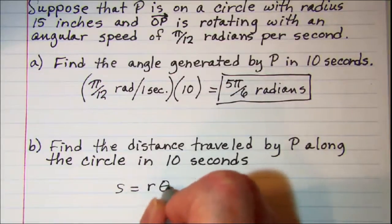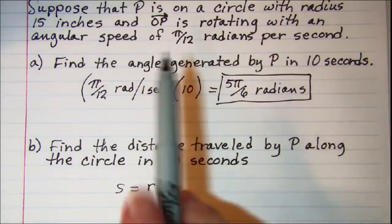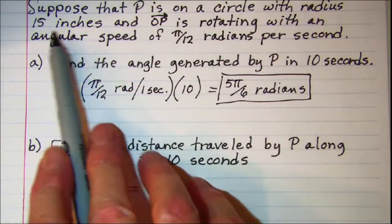Where r is the radius of the circle and θ is the central angle given in radians. So for our problem the radius was 15 inches.